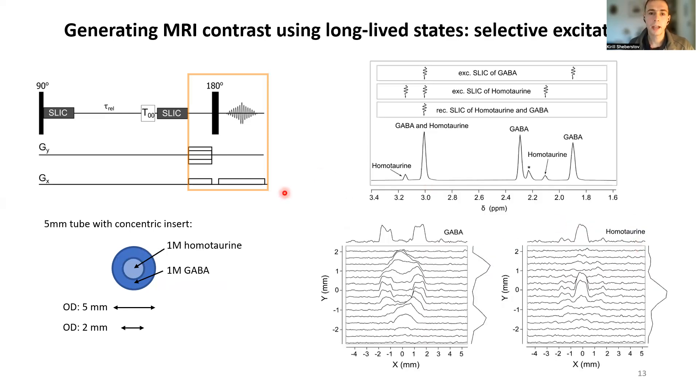Finally, one another idea to generate contrast in MRI is based on selectivity of excitation of long-lived states. In this example, we put homotaurine in the center tube and GABA in the outer tube. It turns out that GABA and homotaurine have CH2 groups which have exactly the same chemical shift around 3 ppm.